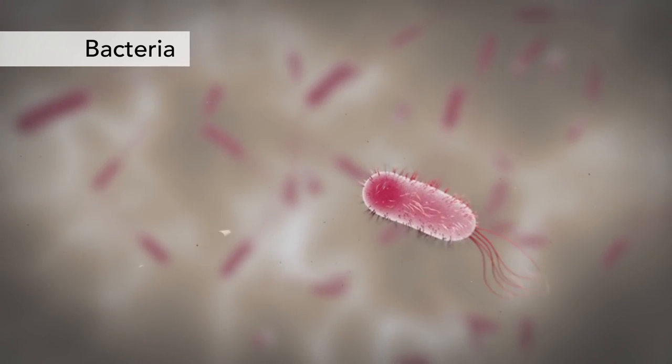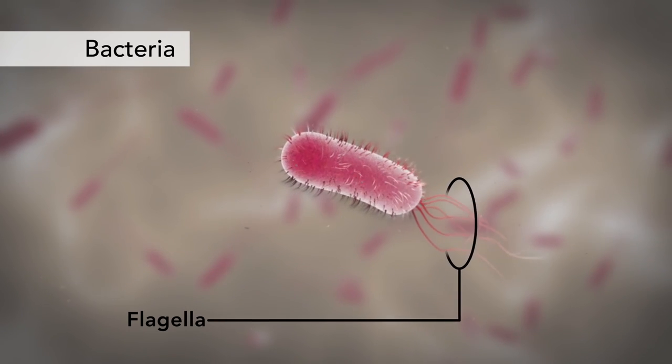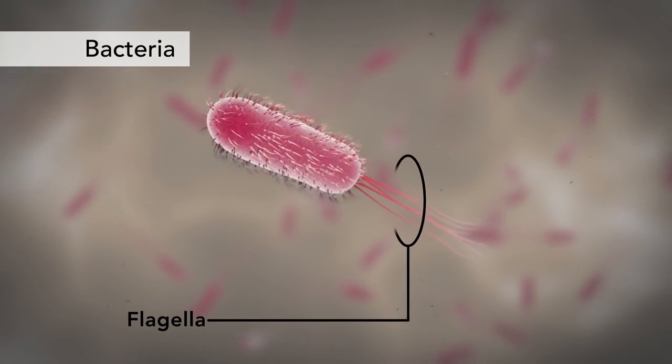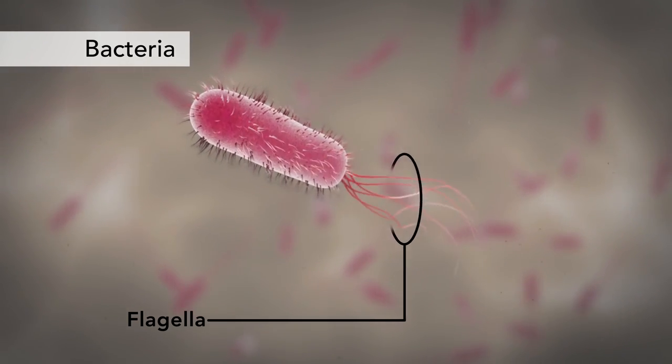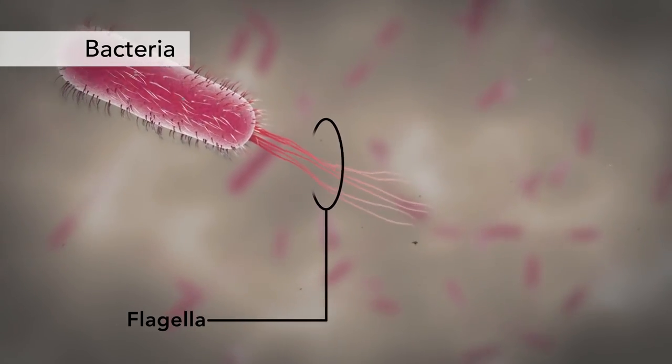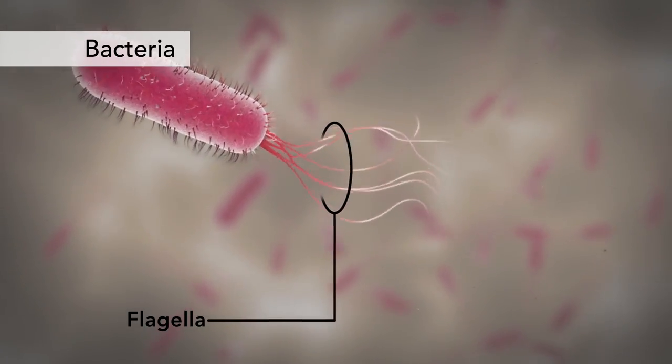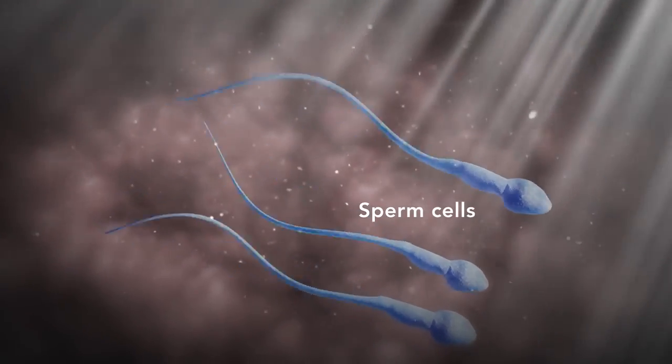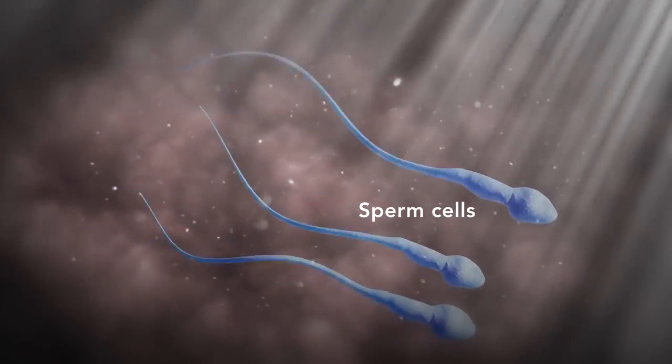Another unique feature in some cells is flagella. Some bacteria have flagella. A flagellum is like a little tail that can help a cell move or propel itself. The only human cell that has a flagellum is a sperm cell.